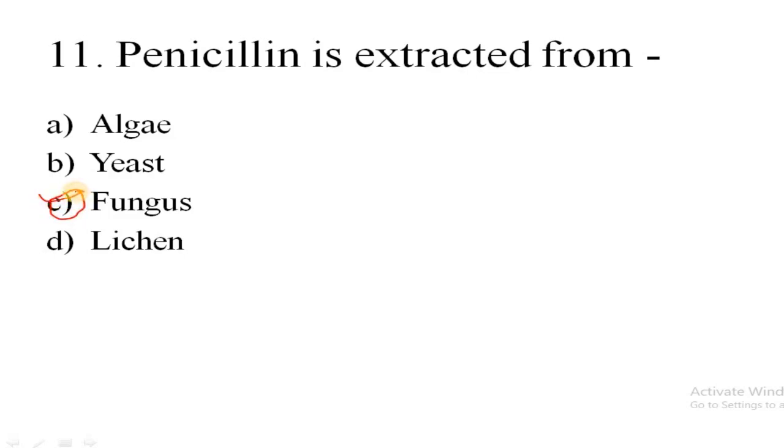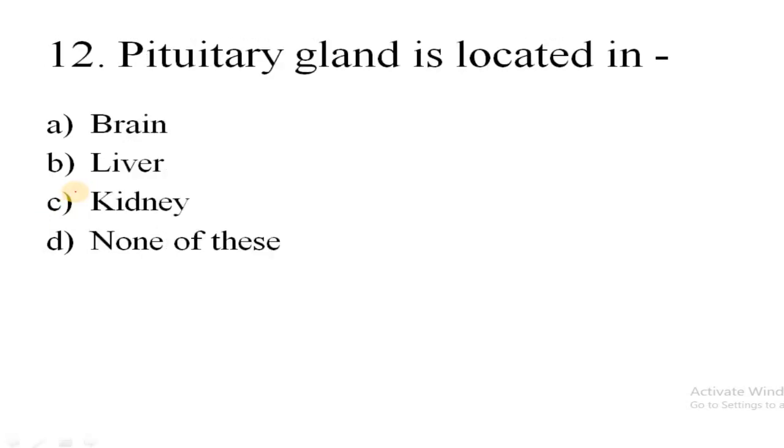Now let's go to the next question. Pituitary gland is located in: option A brain, B liver, C kidney, D none of these. It is also called the master gland and it controls all of the body's glands, and it is present in the brain. So the correct answer is A, that is brain.